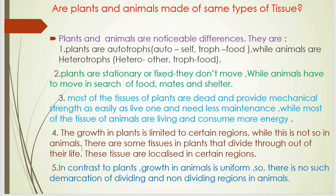Not the same types of tissues — because plants are autotrophs and animals are heterotrophs; plants are stationary but animals move in search of food, mates, and shelter; most plant tissues are dead and require less maintenance, while most animal tissues are living and consume more energy; and growth in plants is limited to certain regions while growth in animals is uniform. So plants and animals are made of different types of tissue.